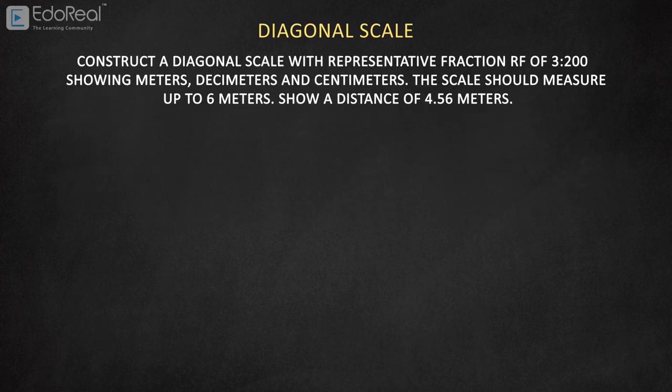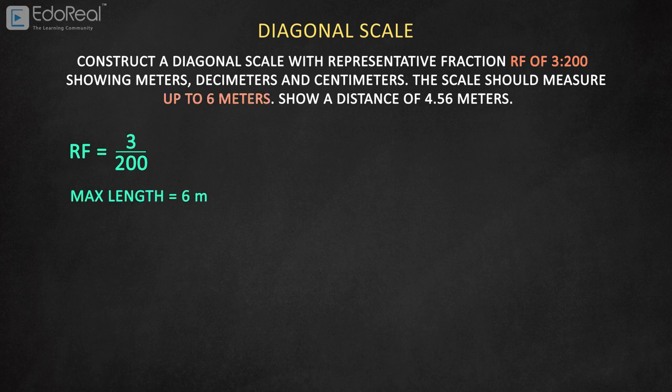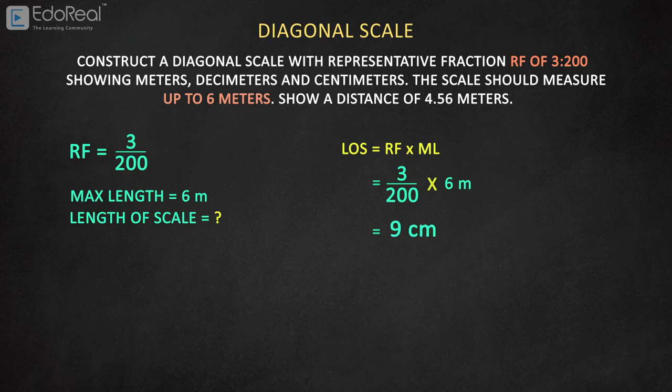From the problem, we already know that RF equals 3 by 200, and maximum length ML is 6 meters. Now we need to find the length of the scale. For that, we have to use the following formula for the length of the scale LOS. Substitute RF and maximum length ML in this equation. Then we get the length of the scale is 9 centimeters.